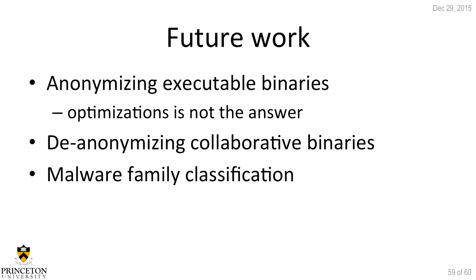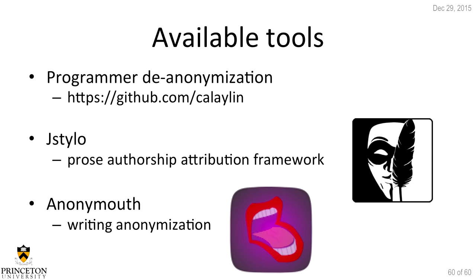For future work, we'd like to look at anonymizing executable binaries — we've shown there's a privacy problem, we can de-anonymize programmers with high accuracy in a simple machine learning setting and at large scale, and optimizations are not the solution. We'd also like to look at de-anonymizing collaborative binaries written by multiple people, and extend this to malware family classification. For that we'd need a dataset with ground truth, so if anyone in the audience has such a dataset, please come talk to me after the talk.